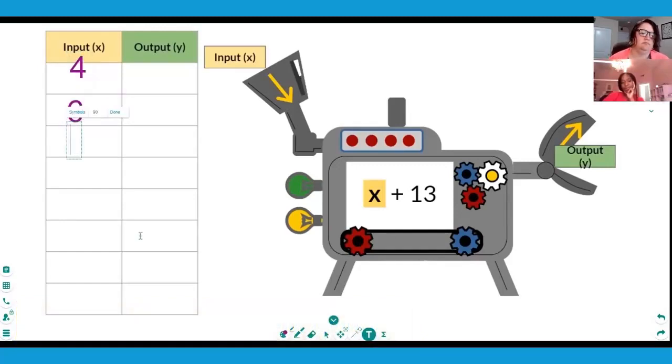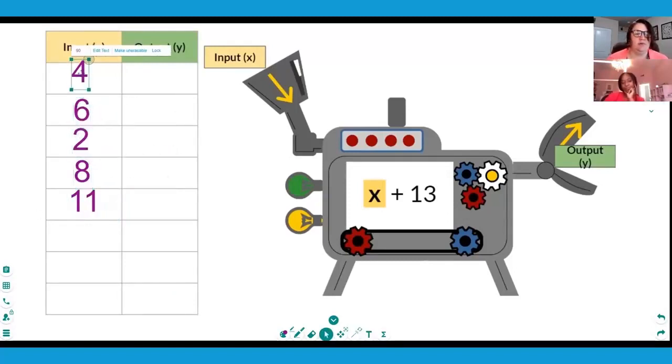Four, six, two, eight, eleven. Okay, we're good. So if we input these numbers into this particular machine, we need to add x—whatever we decided was our input—we need to add 13. What would be our output for the first one? 17.